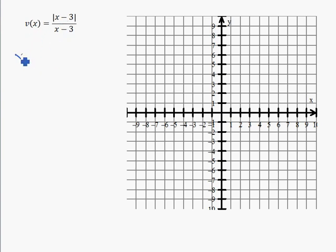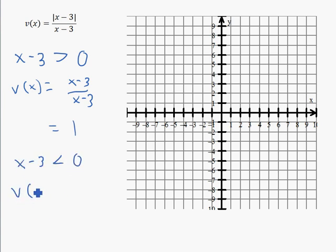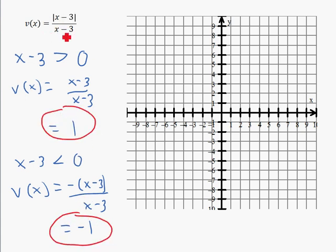So if x minus 3 is greater than 0, then v of x is going to equal x minus 3 over x minus 3. Because the absolute value doesn't do anything, it just leaves x minus 3 alone because it's positive. Well, that's going to equal 1. If x minus 3 is less than 0, then v of x will equal the opposite of x minus 3, it's going to change its sign, over x minus 3. Well, that's just negative 1. So v of x is only going to equal 1 or negative 1.